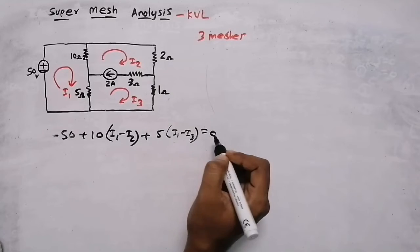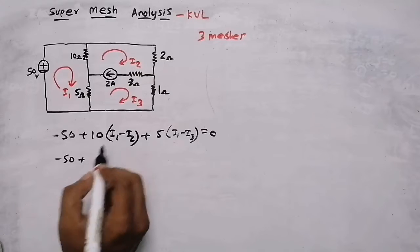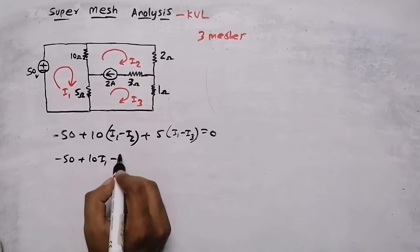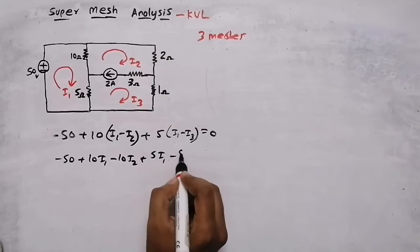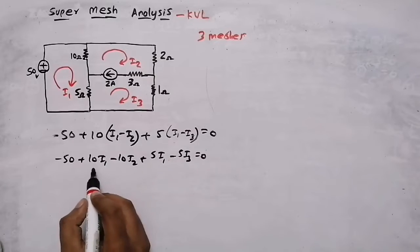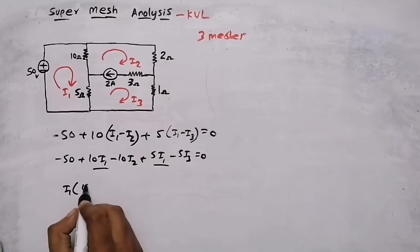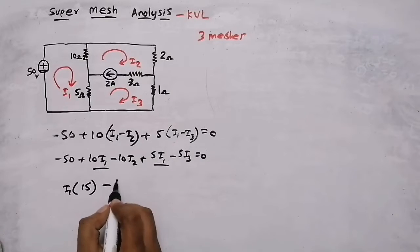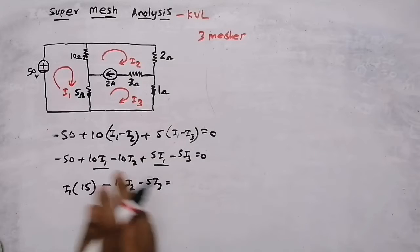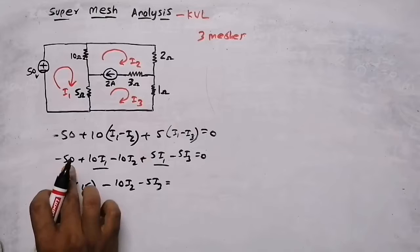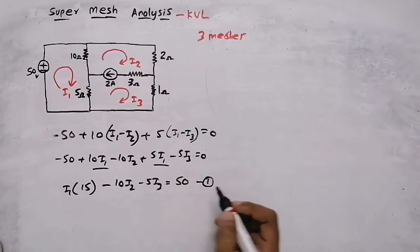Opening the brackets gives: minus 50 plus 10i1 minus 10i2 plus 5i1 minus 5i3 equals 0. Collecting the i1 terms: 10 plus 5 equals 15. Moving the constant to the other side gives the first equation: 15i1 minus 10i2 minus 5i3 equals 50.